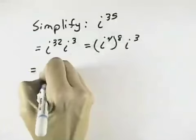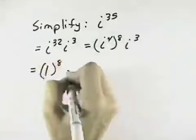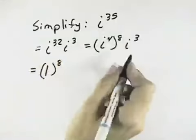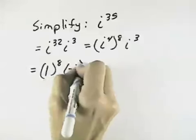And we know i to the 4th is 1, so we have 1 to the 8th times i cubed. i to the 3rd power is negative i.